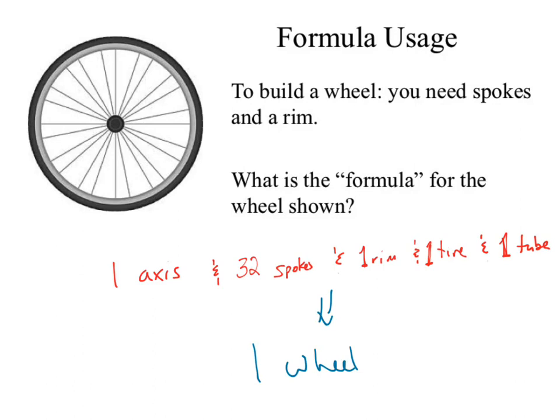What are the units on each of those numbers? What is the unit on 'one wheel'? Wheel is the substance — it's also a unit. In chemistry, what is our unit? In a chemical equation, do we use mass? No. Consider H2 + O2 to make H2O. If we balance that — 2H2 + O2 → 2H2O — now we have our chemical equation balanced.